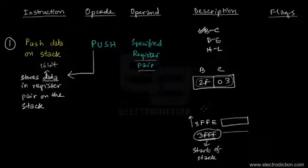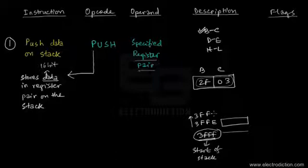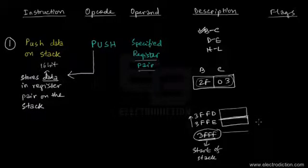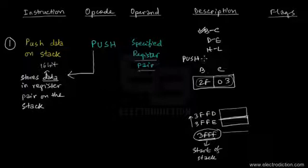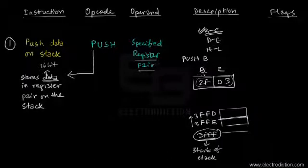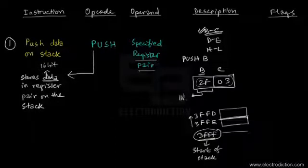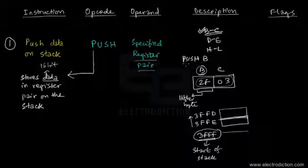Since we want to store 16-bit data, we require two memory locations because each memory location in the external RAM chip used with the 8085 can only store 8-bit data. When declaring this instruction, we say PUSH B — since we're talking about the BC register pair, we mention the name of the register that contains the higher byte. 2F is the higher byte present in register B, so by saying PUSH B it refers to the BC register pair.